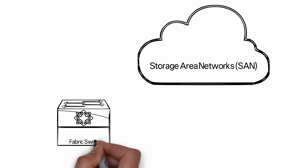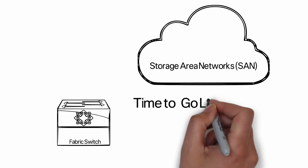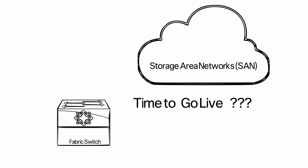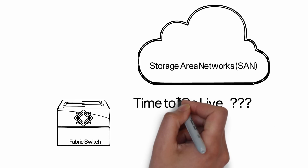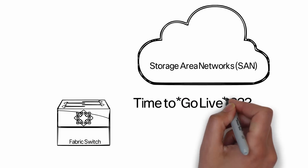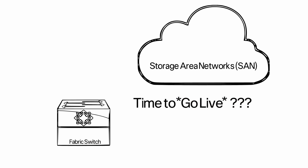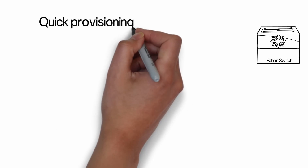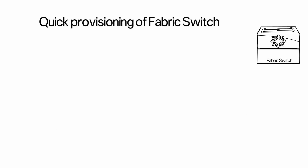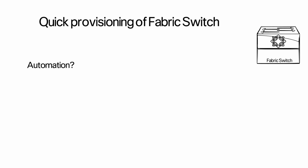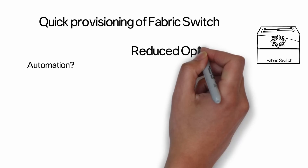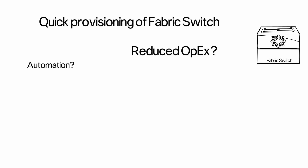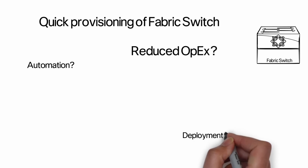One of the biggest needs of a SAN is to reduce the time taken to push a new fabric switch into production. Quick provisioning of a fabric switch is challenging. Is there a way through which this provisioning process can be automated and opex can be minimized?